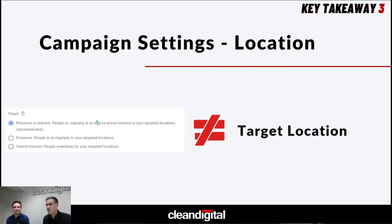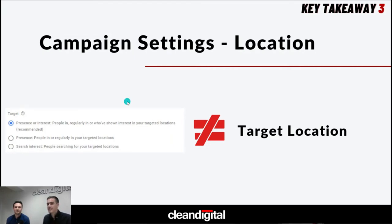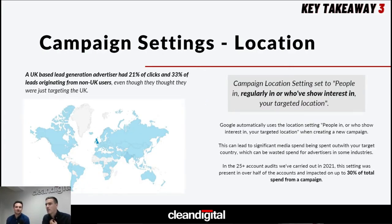The 'regularly in' part is not too bad — it covers things like when people are traveling and based on device settings Google knows they're more of a UK user. But 'showing interest' is more of an issue, particularly for lead gen companies. Google can say 'we think someone from this country is relevant to this ad, so we want to get the click for that.' It's a big one — for a lot of accounts we've audited, even though the target is set to one country, they're getting a lot of traffic from the rest of the world.